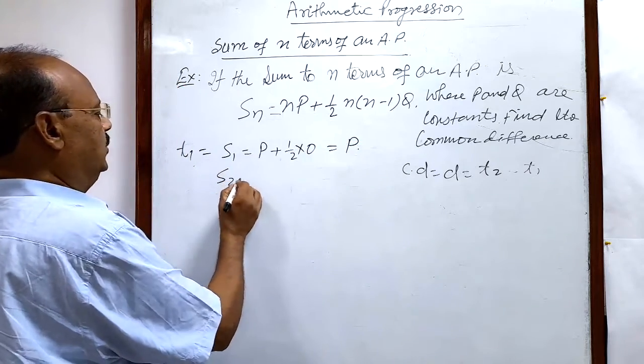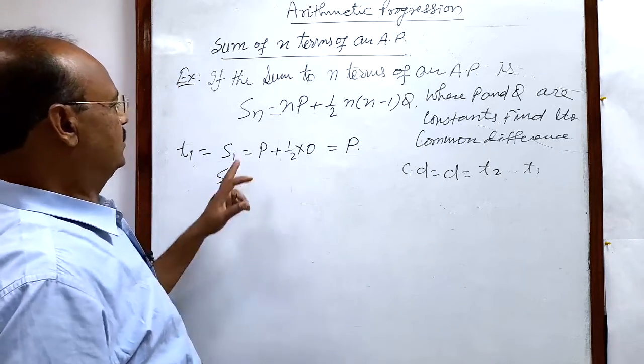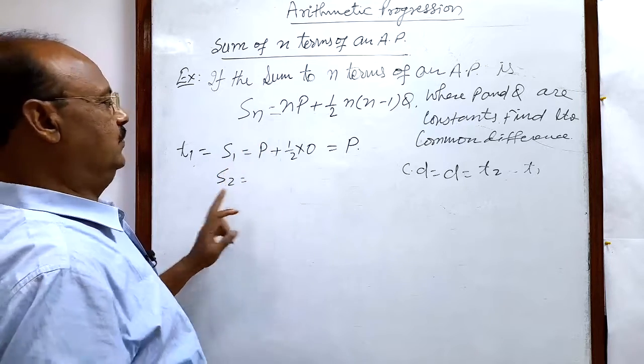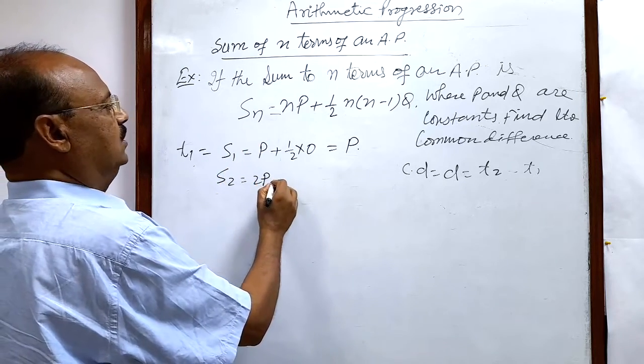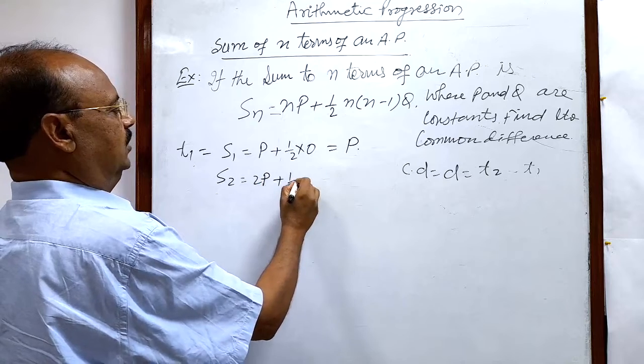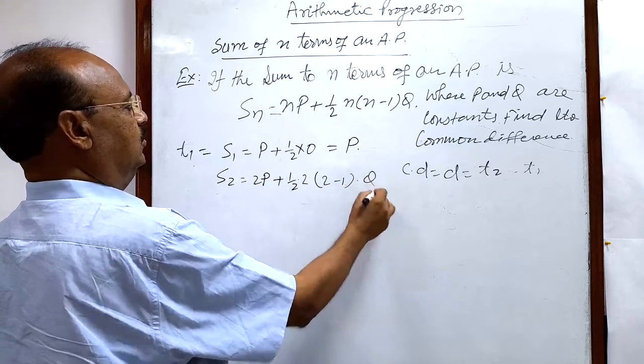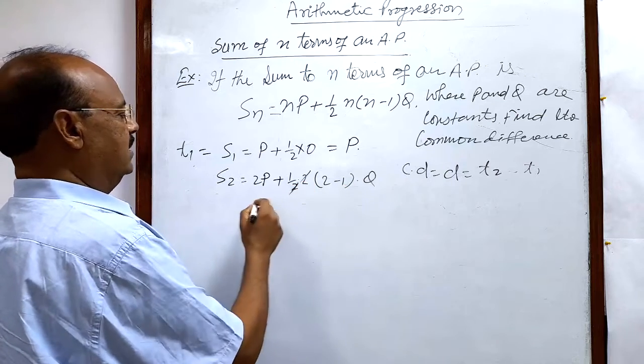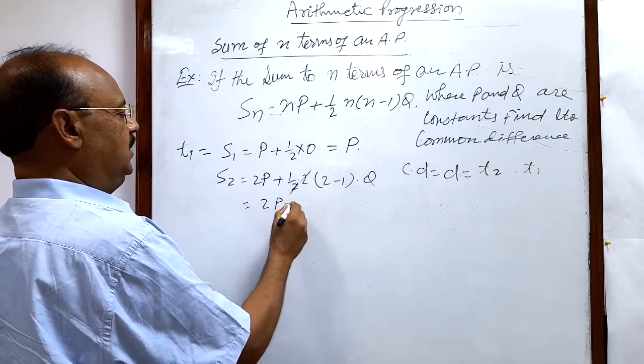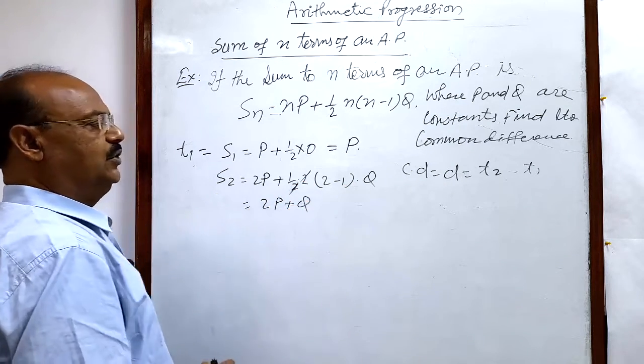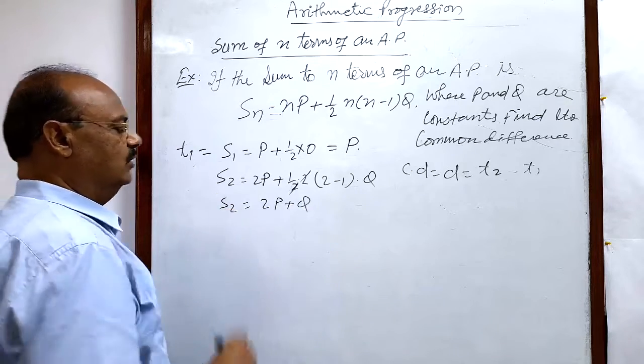Now let us find out s2. In place of n, we will write 2 here, so 2p plus half into 2 into (2 minus 1) into q. This 2 will cancel out, this is 2p plus q. This is the value of s2.